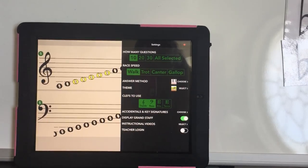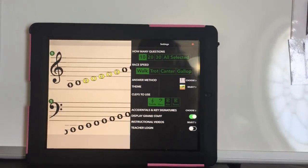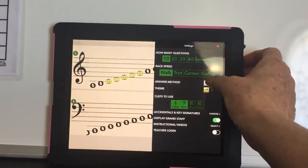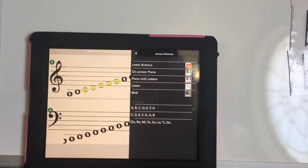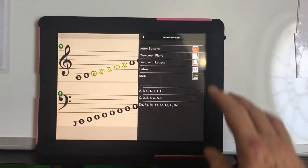Once you have set this up, you may also go to the settings at the top right hand corner. You can decide how many questions you would like your student to be asked per game.